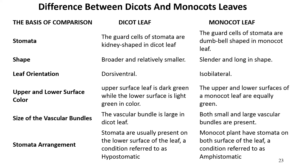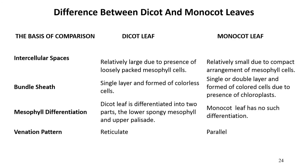In dicot leaves, stomata are usually present on the lower surface only — a condition referred to as hypostomatic. In monocot plants, leaves have stomata on both surfaces — a condition referred to as epistomatic. The intercellular spaces of dicot plant leaves are relatively large due to loosely packed mesophyll cells, while in monocot plant leaves the intercellular spaces are relatively small due to compact arrangement of mesophyll cells.